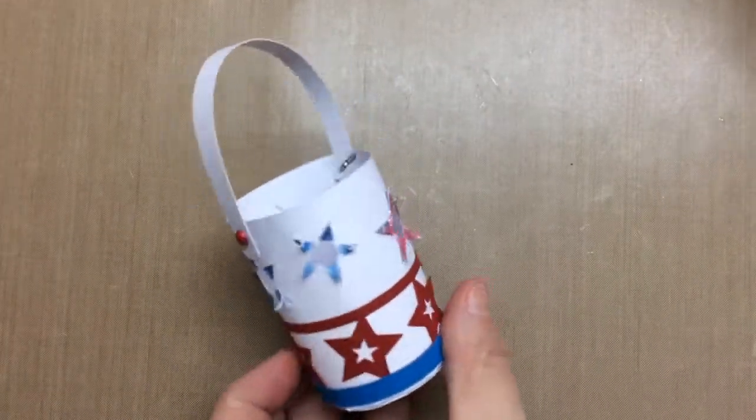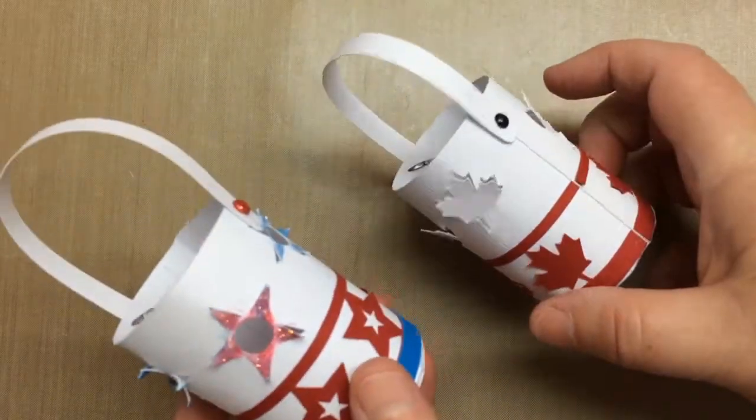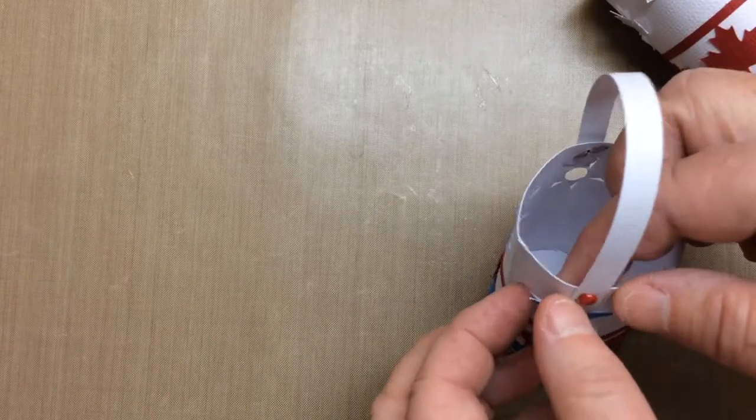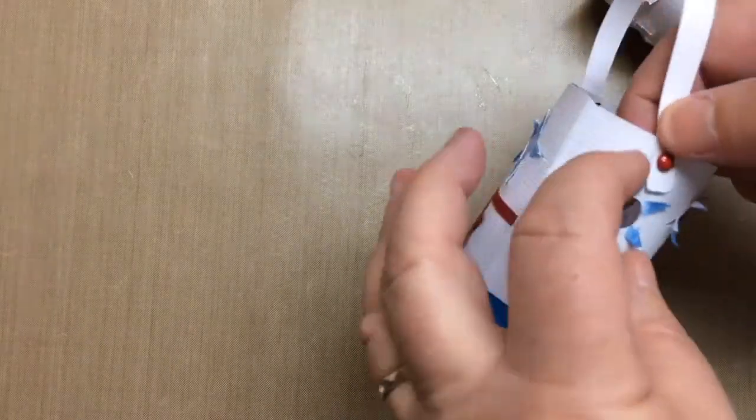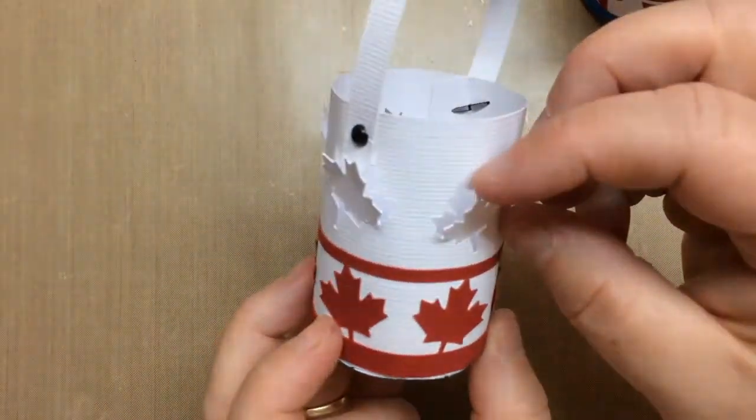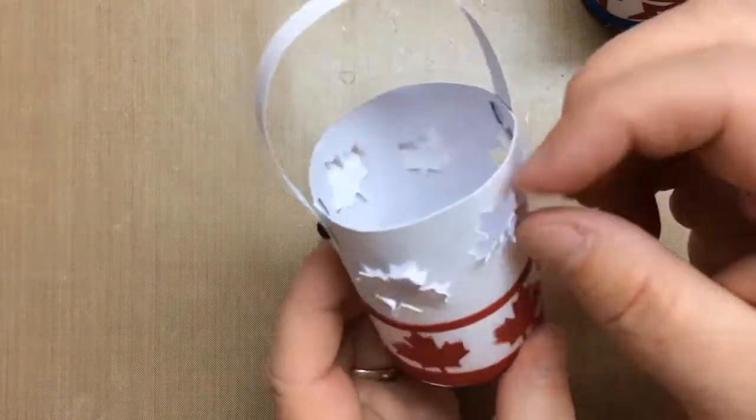Then as you can see it's similar - here's the Canada version. The cutouts here, you just cut out and pull the tips of the stars to expose the light when you have a lantern in there, and the same thing with the maple leaves.